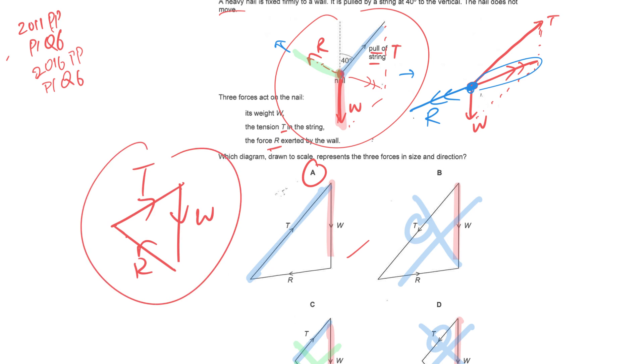Option A is the best representation. There are different possible configurations depending on the relative magnitudes of W, R, and T, but the key point is that R from the wall must always point towards the left. I hope if you come across similar questions you'll be able to solve them. Thank you so much.